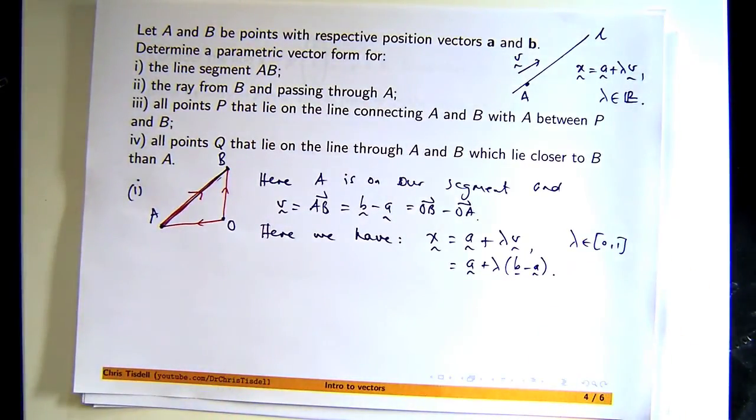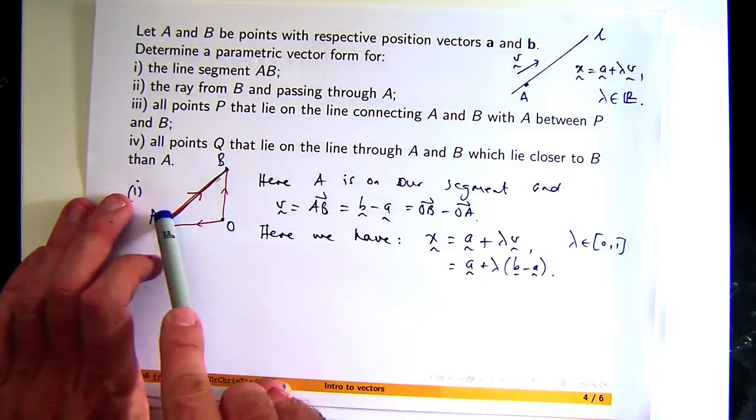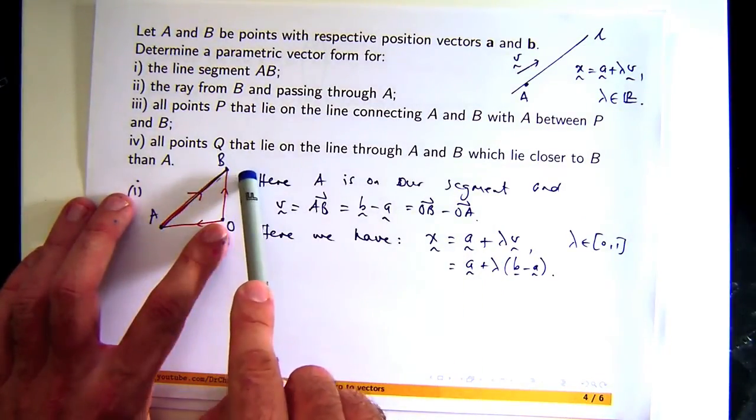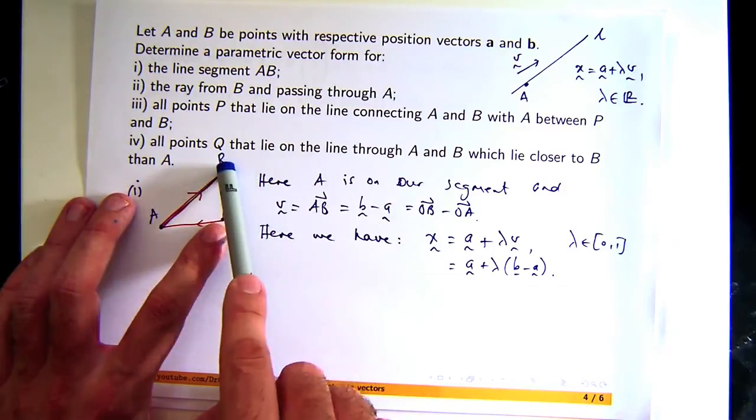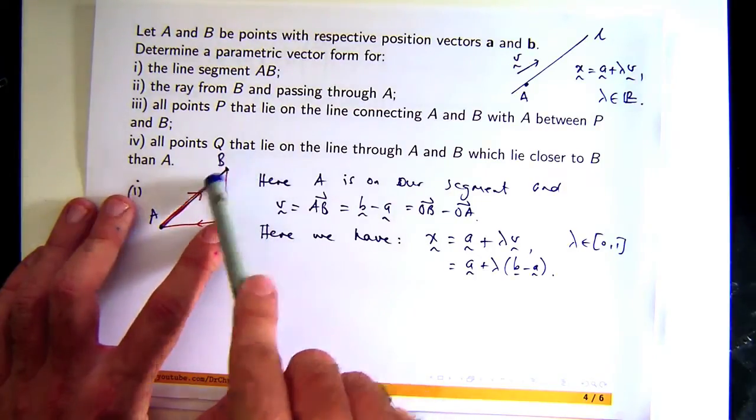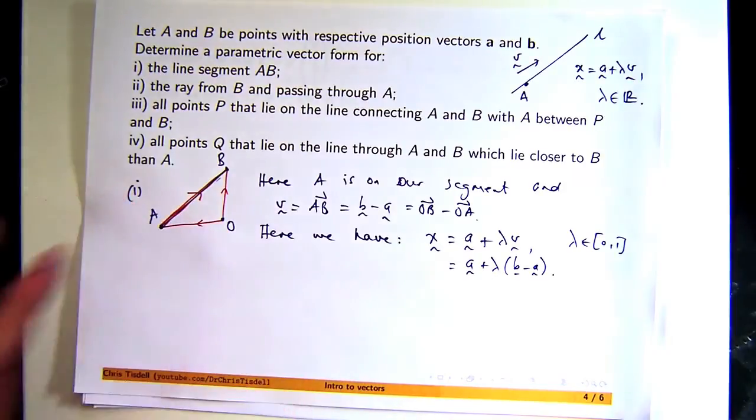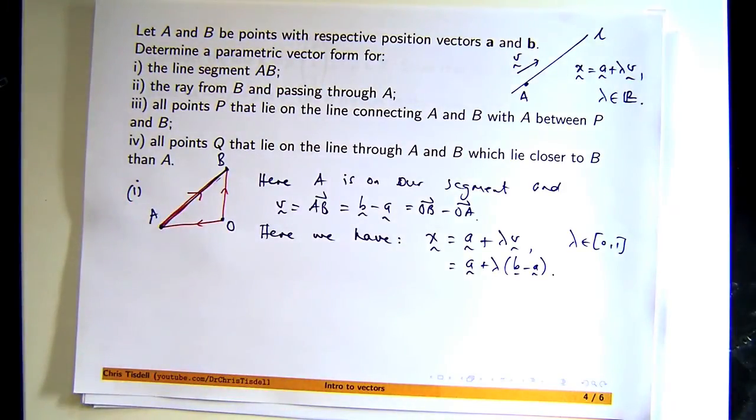And in terms of these position vectors, it'll be this. Now, here's a good question. Is that the only parametrization? Can I describe that line segment a different way? Does the direction matter? Which way the function sweeps it out? No, you're right, the answer's no. So what would be another parametrization for this line? You could have OB plus lambda times BA. That'll be fine too. And with lambda between 0 and 1.